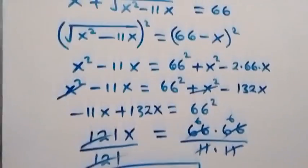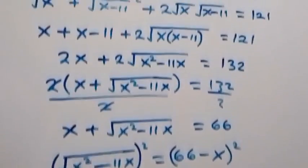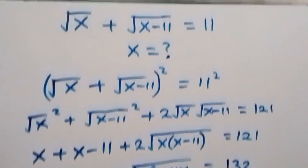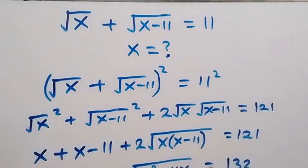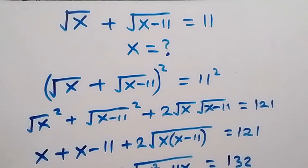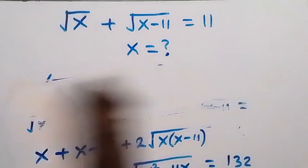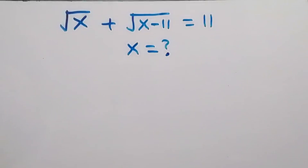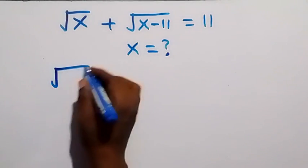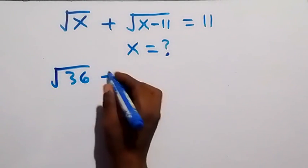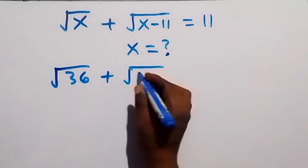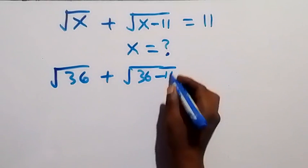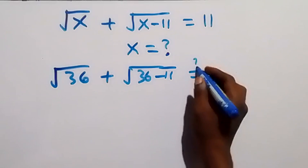To quickly verify, substituting x = 36 into the original equation: √36 + √(36 − 11). Is this going to give us 11?